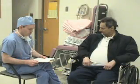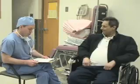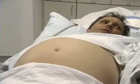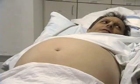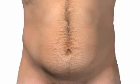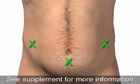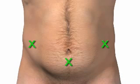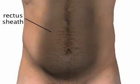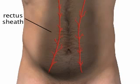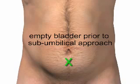Explain the procedure to the patient and obtain informed consent. Risks of bleeding, infection, intra-abdominal organ injury, and post-procedure hypotension should be discussed. Position the patient supine in the bed with the head slightly elevated. Recommended sites of needle insertion are two centimeters below the umbilicus in the midline and either the left or right lower quadrants. If a lower quadrant approach is used, confirm that the entry site is lateral to the rectus sheath to avoid puncturing the inferior epigastric artery. If the sub-umbilical approach is used, the bladder should be emptied before the procedure.